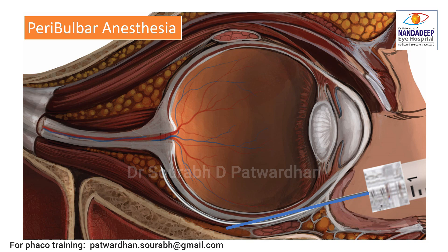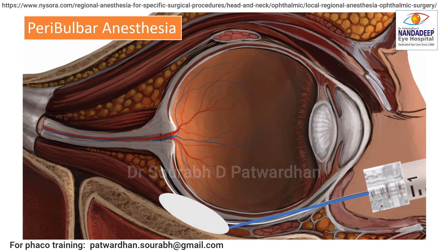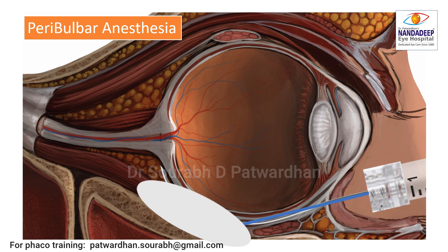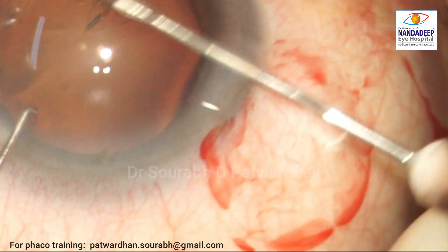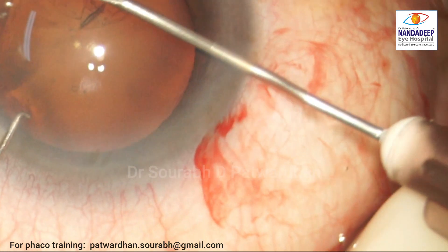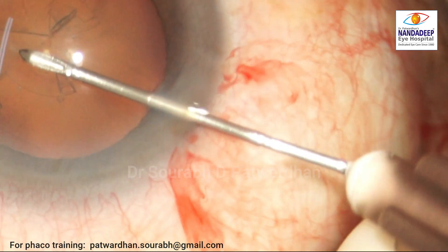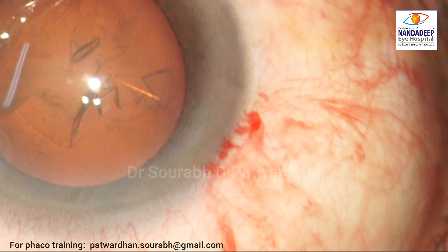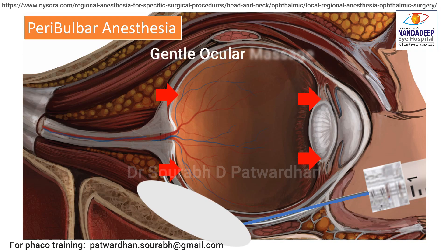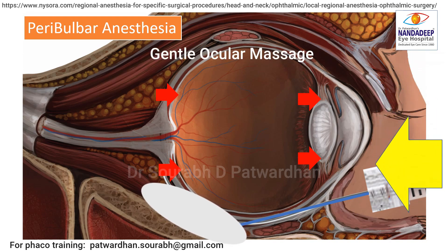Remember, I am doing this case under peribulbar anesthesia. When we give peribulbar anesthesia, there is increased intraorbital pressure, and this further leads to pushing of the globe anteriorly. And when you incise the cornea, this pressure is going to push everything out. So I gave peribulbar injection here because I was doing a combined phaco-vitrectomy, and the intraorbital pressure remained high. That was the reason.